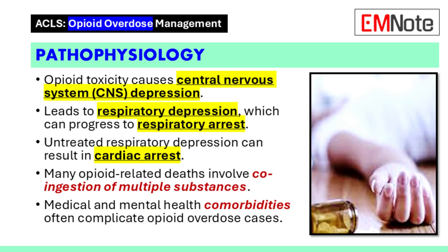Pathophysiology: Opioid toxicity leads to central nervous system depression and respiratory depression. These effects can progress to respiratory arrest and, if untreated, cardiac arrest. Most opioid-associated deaths involve the co-ingestion of multiple substances as well as medical and mental health comorbidities.